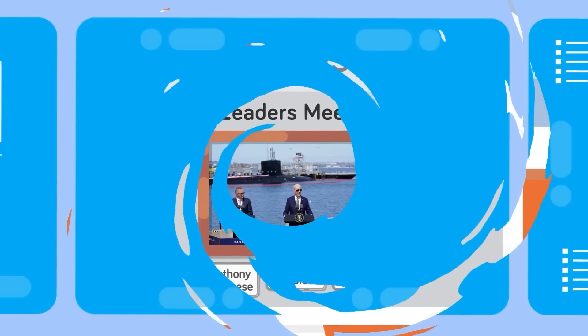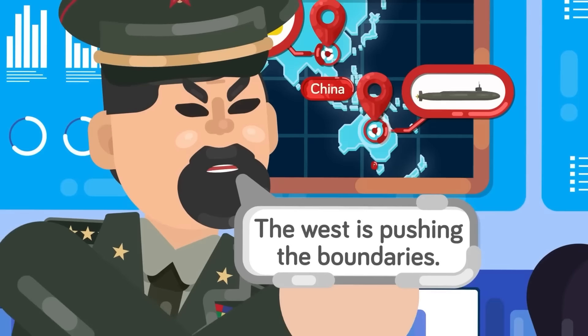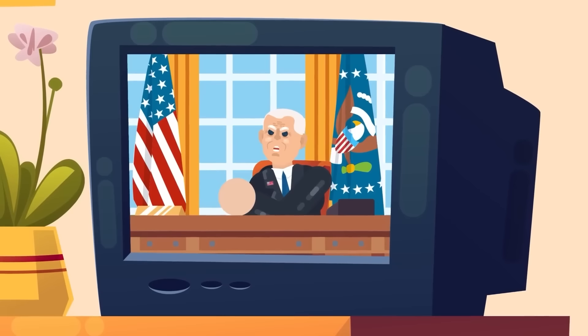The three nations laid out plans to deliver nuclear-powered submarines to Australia in the coming years. This obviously worries China because it would threaten its position in the Indo-Pacific region of the world and have dire consequences for any future plans. However, China is not the only country that's unhappy with what's become known as the AUKUS Alliance.